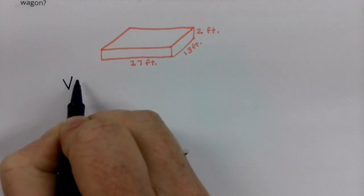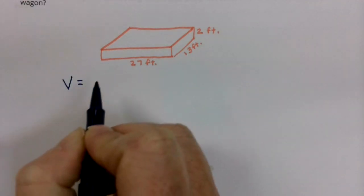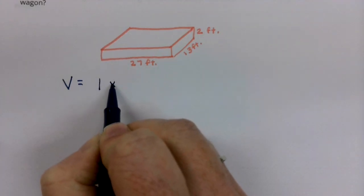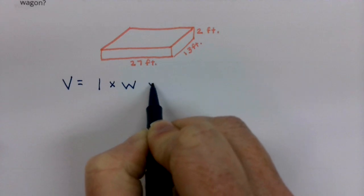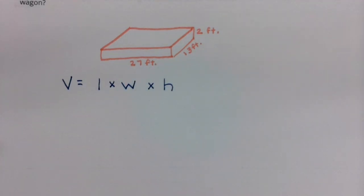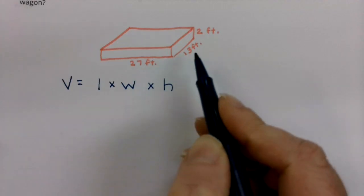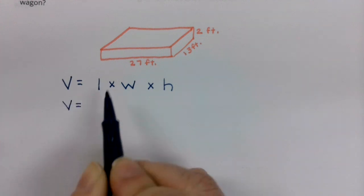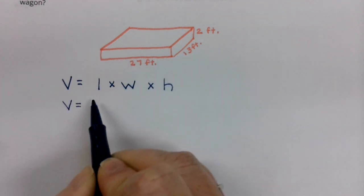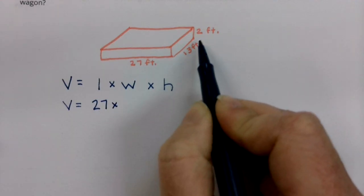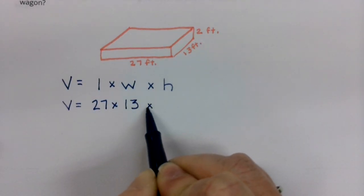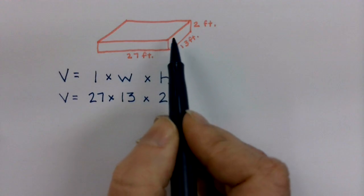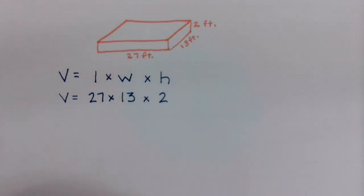The first thing I'm going to do when I calculate the volume is get the area of the base. The area of the base is found with length times width, and once I know that, I will multiply it by 2, which is the height. Let's exchange our variables. The length of our wagon is 27, the width is 13, and the height is 2.